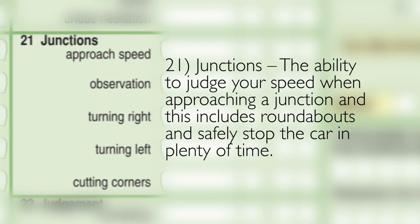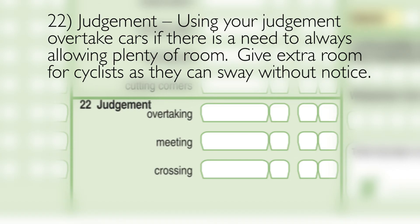21: Junctions. The ability to judge your speed when approaching a junction — this includes roundabouts — and safely stop the car in plenty of time. 22: Judgment. Using your judgment, overtake cars if there is a need, always allowing plenty of room. Give extra room for cyclists as they can sway without notice.